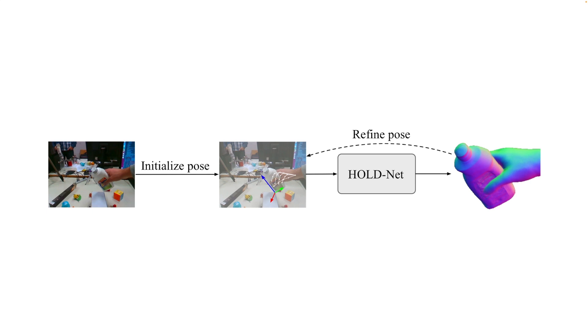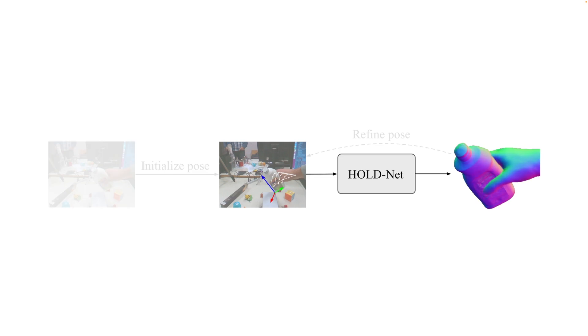To jointly reconstruct the hand and object surfaces from a video, HOLD begins by estimating hand poses with an off-the-shelf hand regressor and object poses using a structure-from-motion method. Using these initial estimates of the hand and object poses,